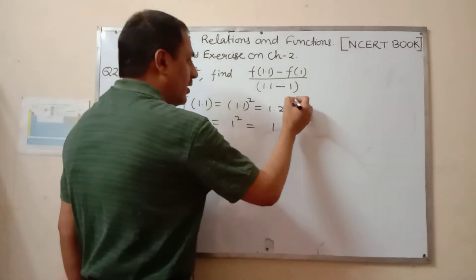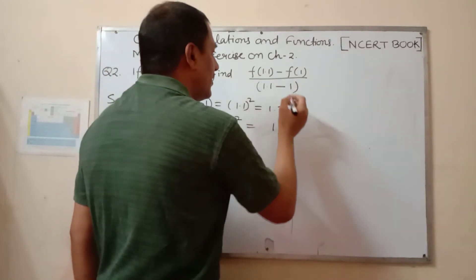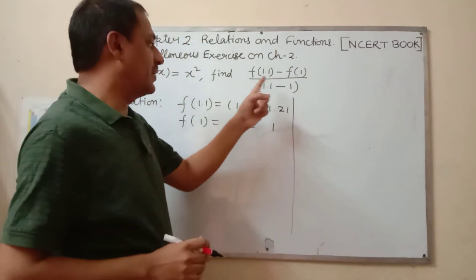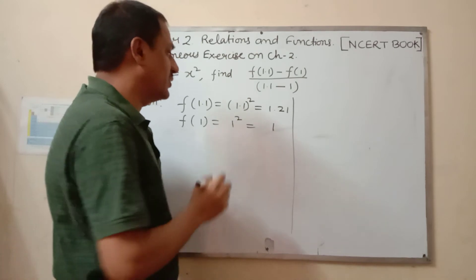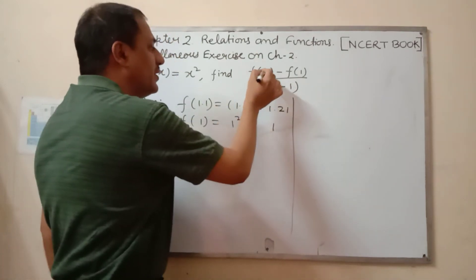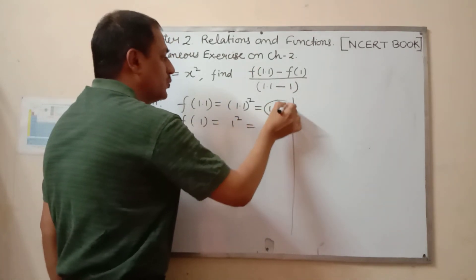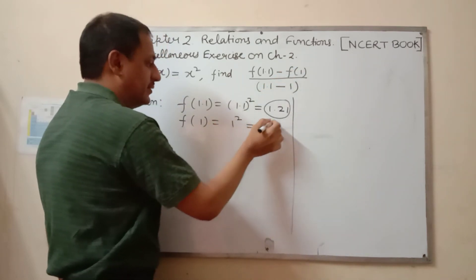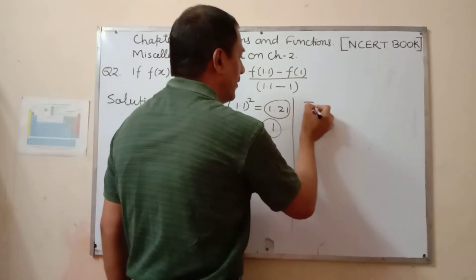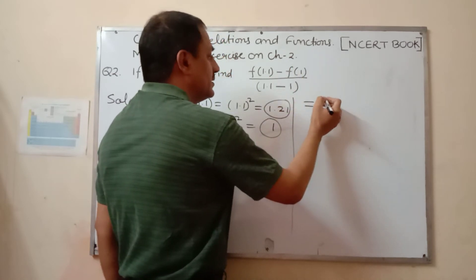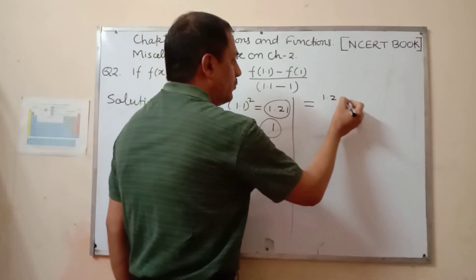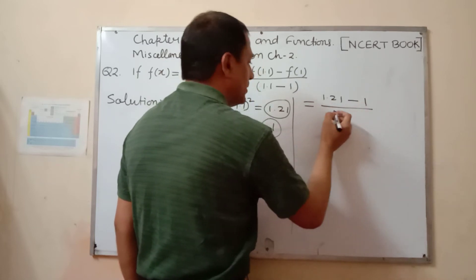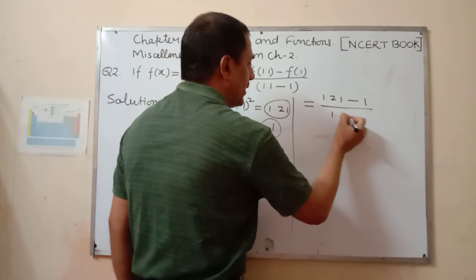Now the value of [f(1.1) - f(1)] / (1.1 - 1) is equal to... in place of f(1.1) we will put 1.21 and f(1) we will put 1. Now the value of 1.21 minus 1 upon 1.1 minus 1.